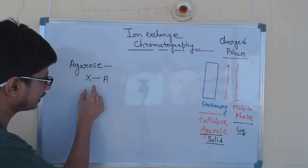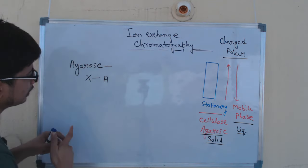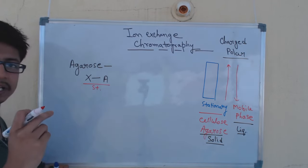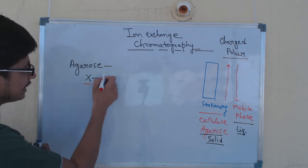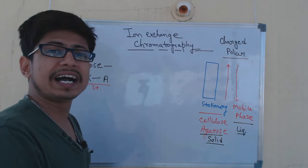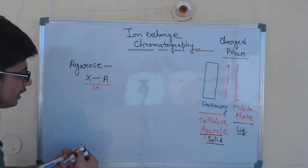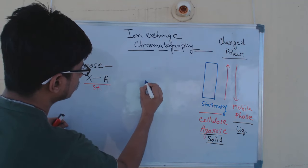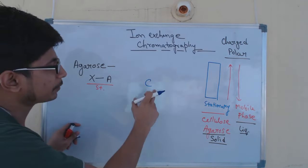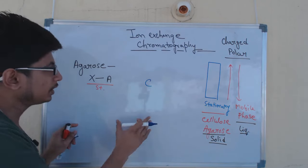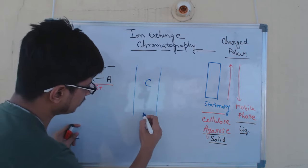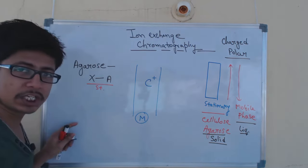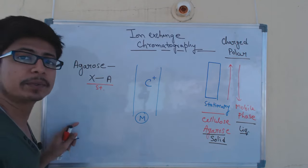The stationary phase is fixed. If it is a cation exchange chromatography, the stationary phase will attach to a cation — positively charged ions. Let's say C+ is the molecule we want to separate from the mixture. It is in the mobile phase. C is positively charged — it's a cation that we want to separate.